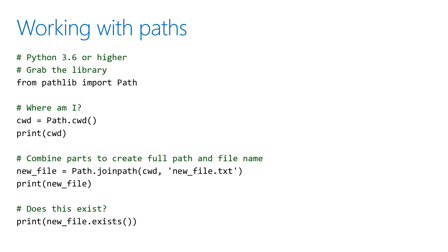So it's the Path library, and we're going to import that library to be able to use it. Once we've done that, we can simply use cwd for current working directory. So if you want to retrieve what directory you're in right now, it's just Path.cwd.